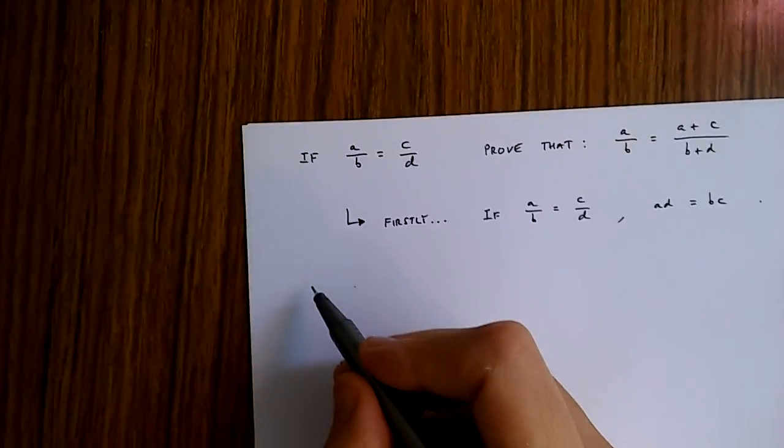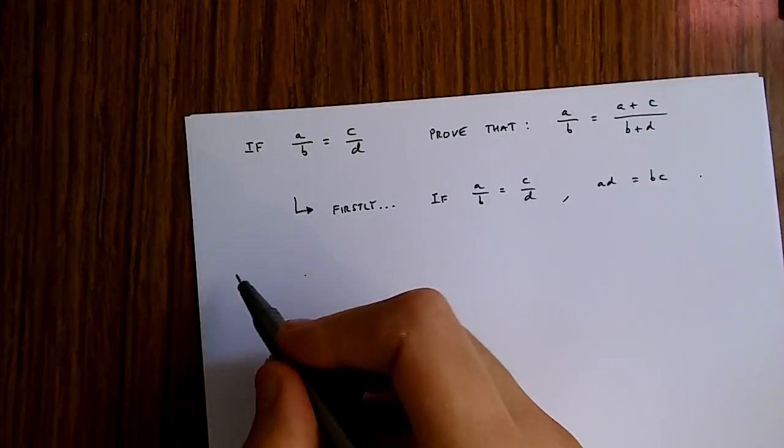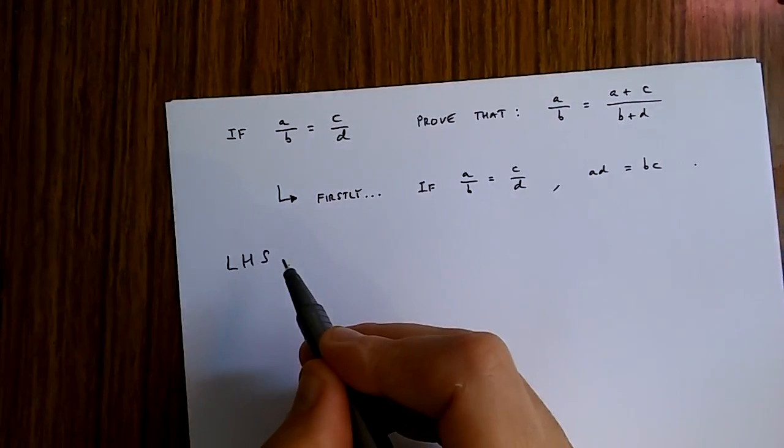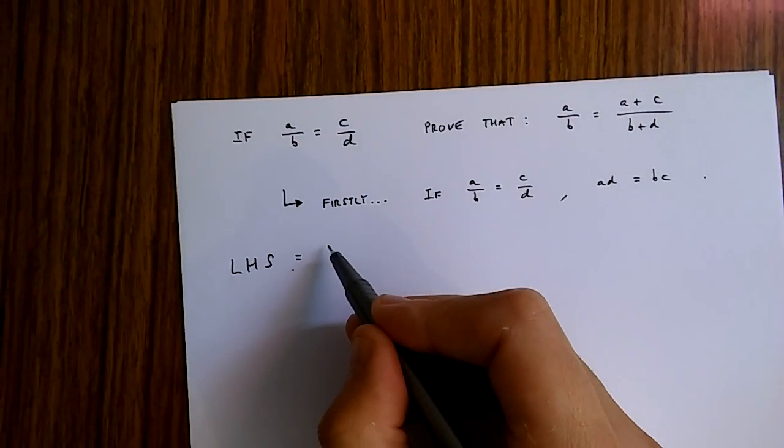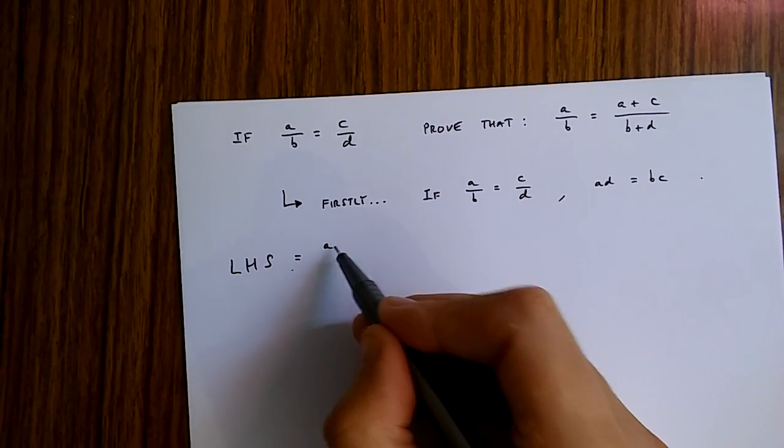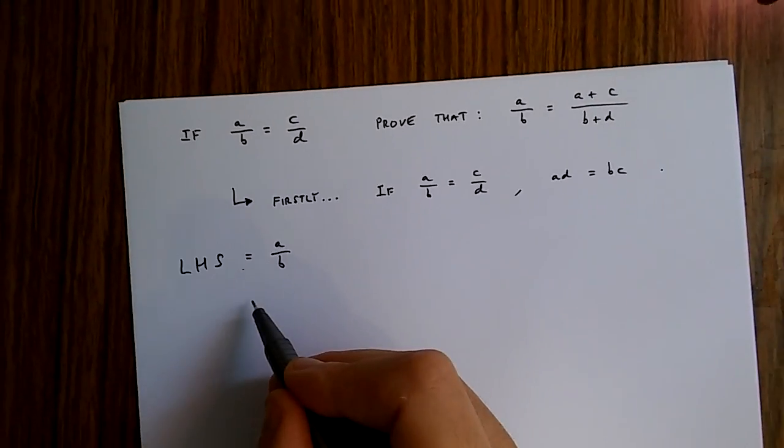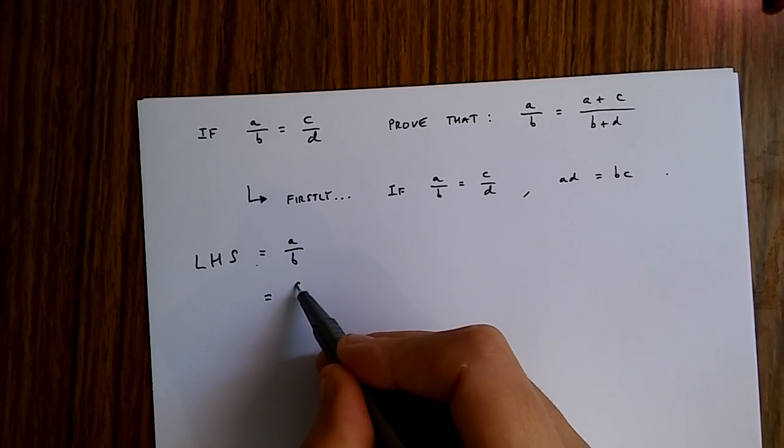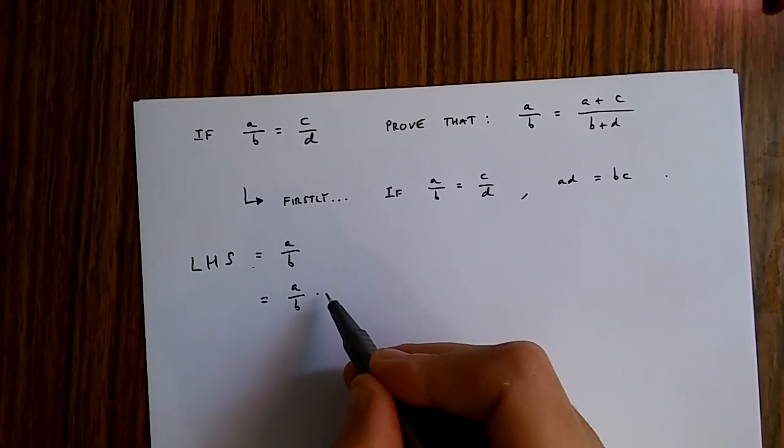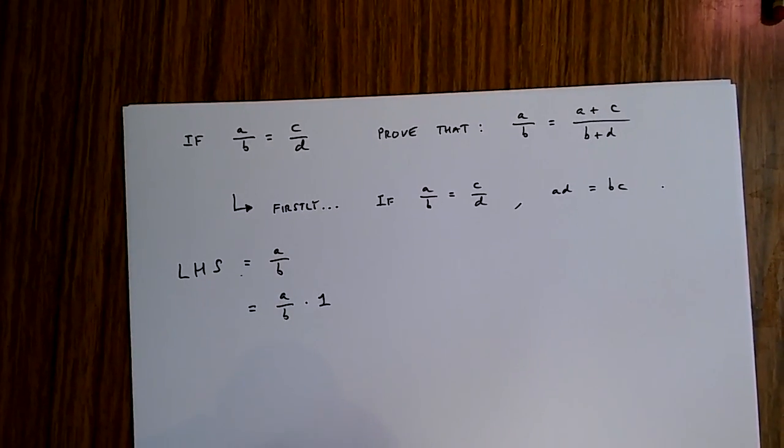So we'll begin proving this by writing down left-hand side. This is going to be equal to a over b. Now, this is the same as a over b times 1.